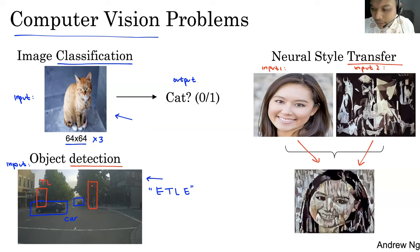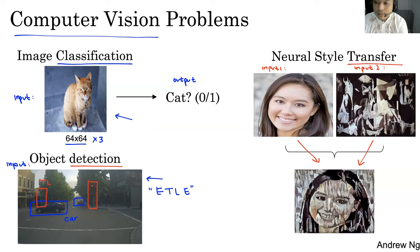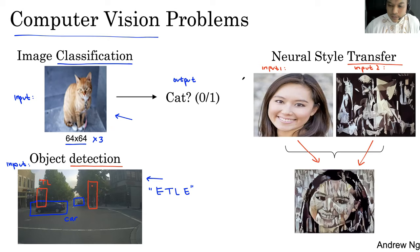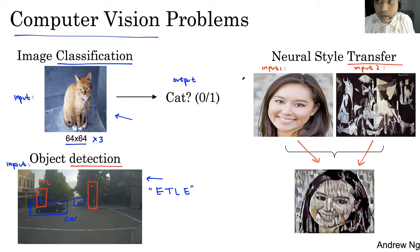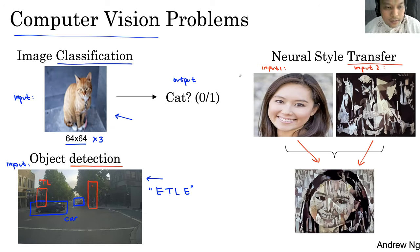Ada juga kasus seperti di Bundaran HI, ada pesepeda ditabrak sama pengendara mobil, tabrak lari. Tapi itu bisa langsung didetect karena pada saat kondisi kecelakaan nomor platnya direkognize. Sekarang sudah bisa cari nomor plat itu bukan manual lagi, bukan orang lagi, tapi sudah pakai kamera karena kameranya sudah bisa mendetect nomor polisi. Itu semua di-enable oleh AI yang backbone-nya adalah convolutional neural network.